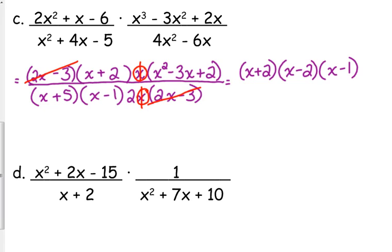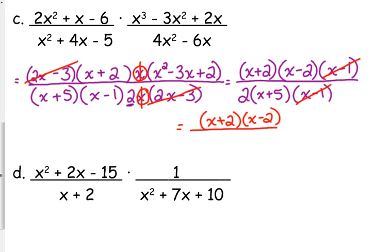x squared minus 3x plus 2 factors into x minus 2 times x minus 1. Negative 2 times negative 1 is positive 2, and you add them, you get negative 3. And in the denominator, all we've got left are x plus 5, x minus 1. Don't forget about this 2 right here. So, I'll put that in the front. That's where our coefficients or just plain constants are supposed to go. And now, we can cancel one more factor, x minus 1, in the numerator and in the denominator.